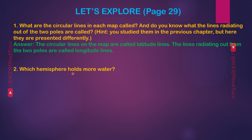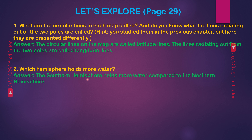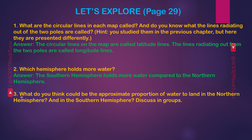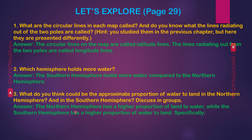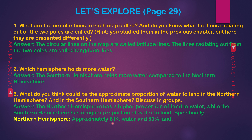Question 2: Which hemisphere holds more water? Answer: the Southern Hemisphere holds more water compared to the Northern Hemisphere. Question 3: What is the approximate proportion of water to land in the Northern and Southern Hemispheres? Answer: the Northern Hemisphere has approximately 61% water and 39% land. The Southern Hemisphere has approximately 81% water and 19% land.